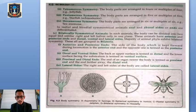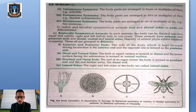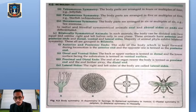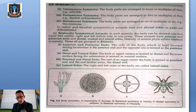Looking at the figures: figure A shows sponges, which are asymmetrical — the body cannot be divided into equal halves from any plane. Figure B shows spherical symmetry animals, figure C shows radial symmetry animals, and figure D shows bilateral symmetry animals, where the body can be cut into two equal halves from only one plane.